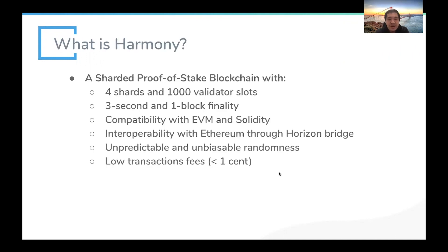Harmony is a sharded proof-of-stake blockchain. Right now in our mainnet we have four shards running consensus in parallel, and in total there can be up to a thousand validators reaching consensus and producing blocks. The consensus is called FBFT, which can produce blocks within three seconds — currently the mainnet produces blocks every five seconds, but blocks are confirmed basically within three seconds.